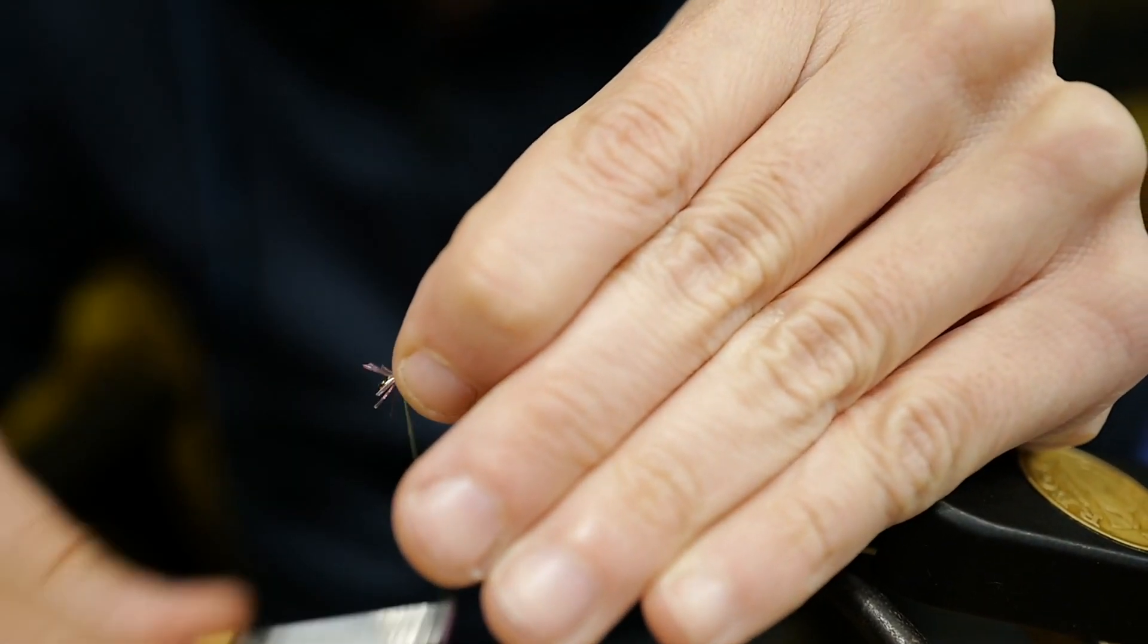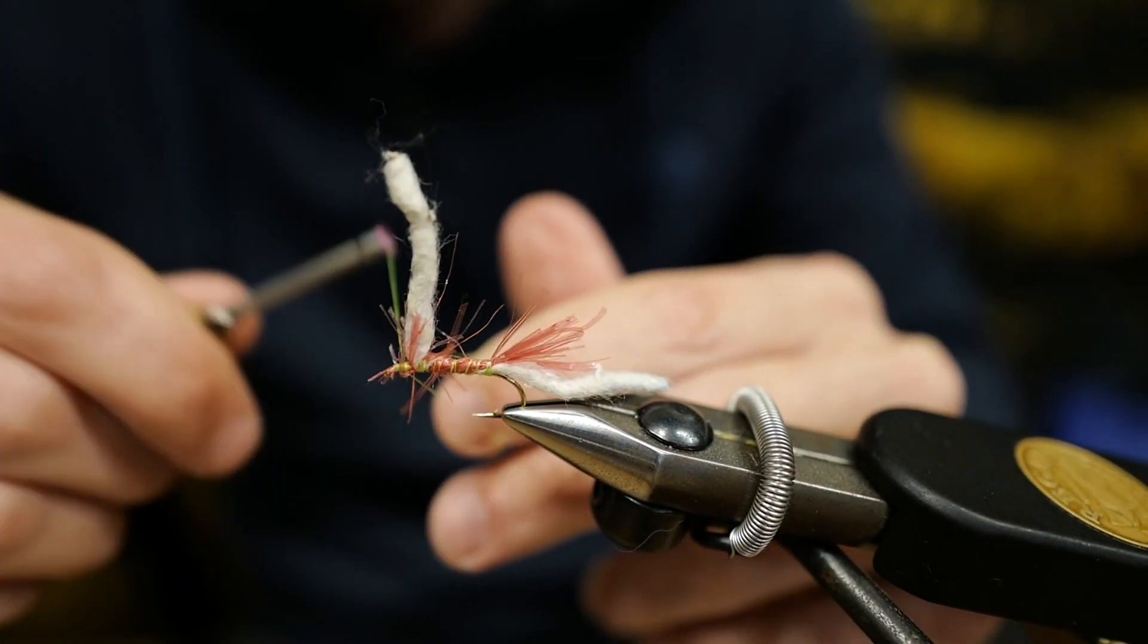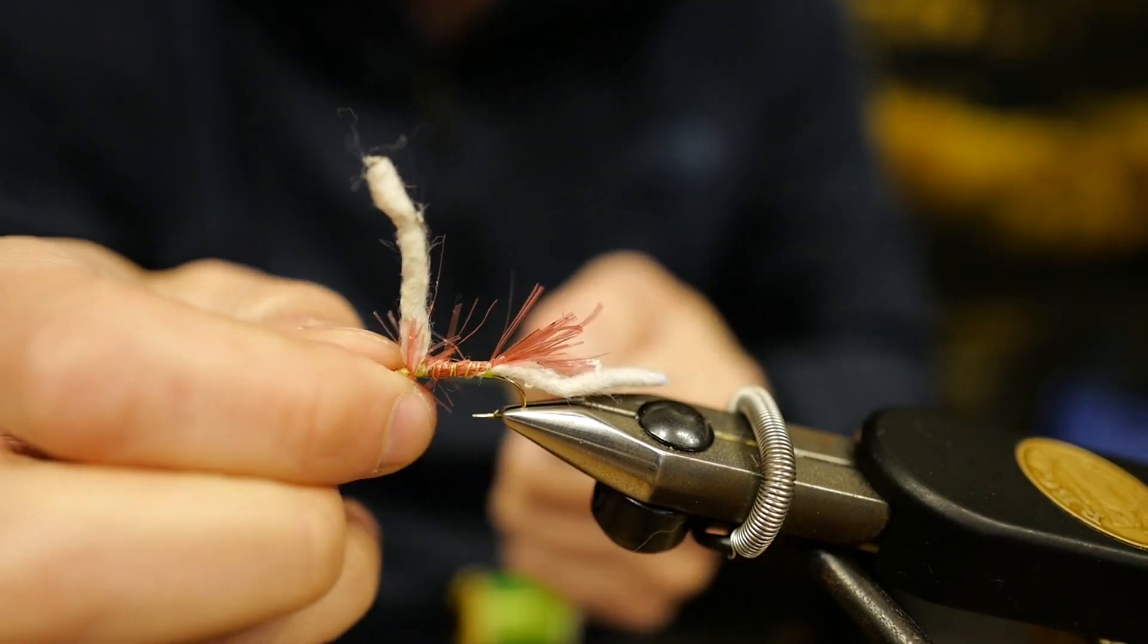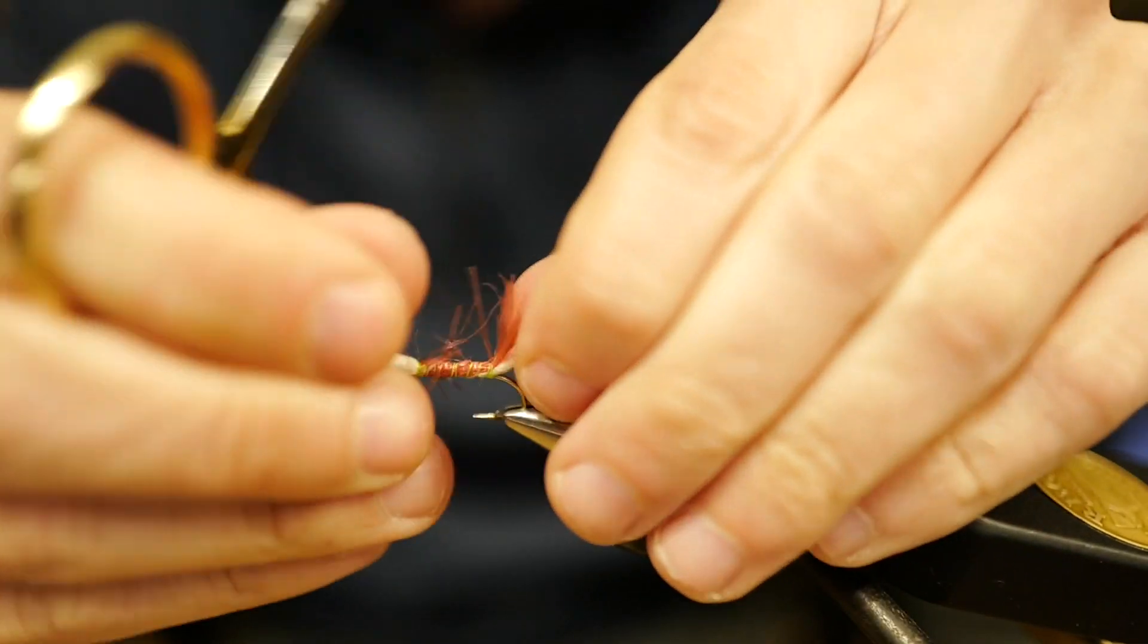Now my fly is actually already done. I'm just going to finish the head off here. Tie a knot. Cut my thread, and now we're going to do a little bit of trimming to make sure this actually looks like something.